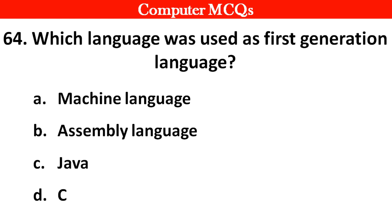Next question: Which language was used as the first generation language? Options A. Machine language, B. Assembly language, C. Java, D. C. Right answer is option A: Machine language.